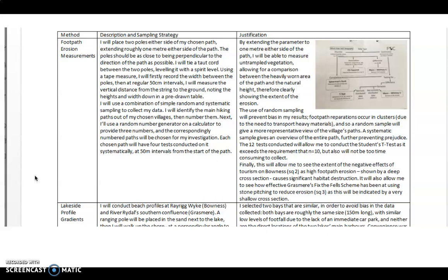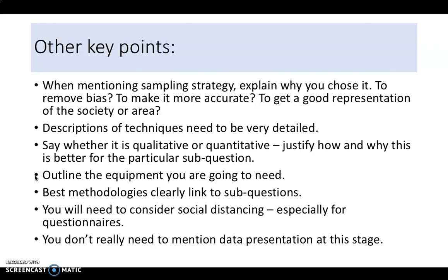Okay, a few more key points that myself and Miss have discussed. Some of these will have been mentioned already. When mentioning sampling strategy, explain why you chose it. We've already talked about that - is it to remove bias, to make it more accurate, to get a good representation across an area or about the society? Some people's descriptions of techniques are not detailed enough. These need to be so detailed I need to be able to know exactly where I'm going to go and how you are going to carry that study out. You need to say whether it is a qualitative or quantitative piece of data collection. Also, you could mention whether it's primary or secondary and justify how and why this is better for a particular sub-question.